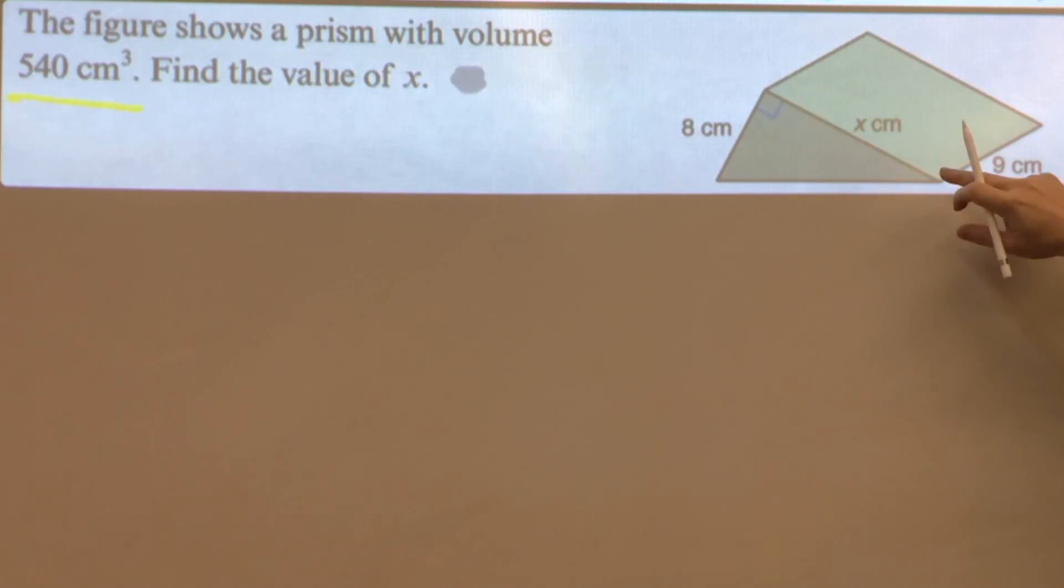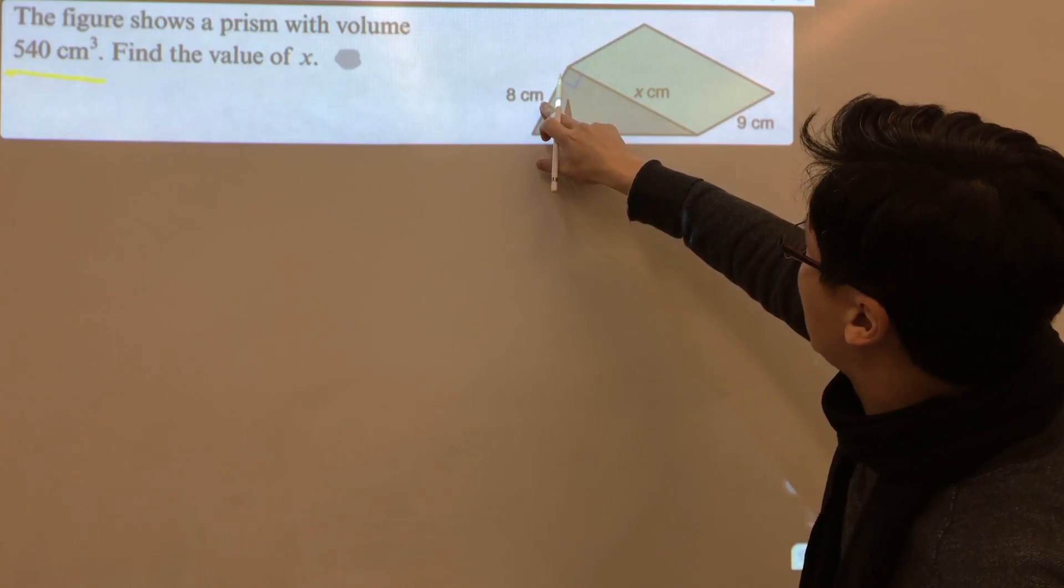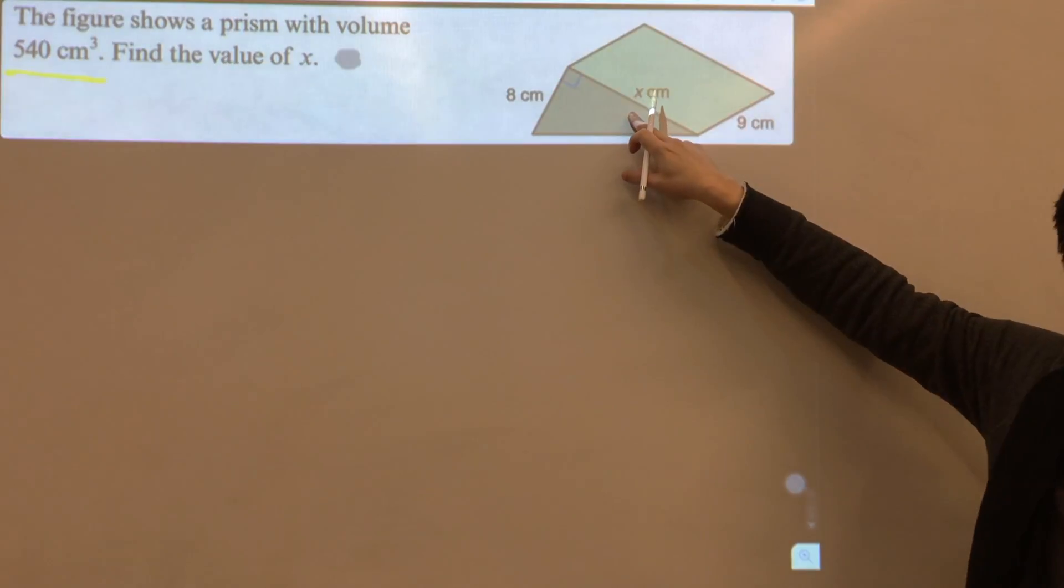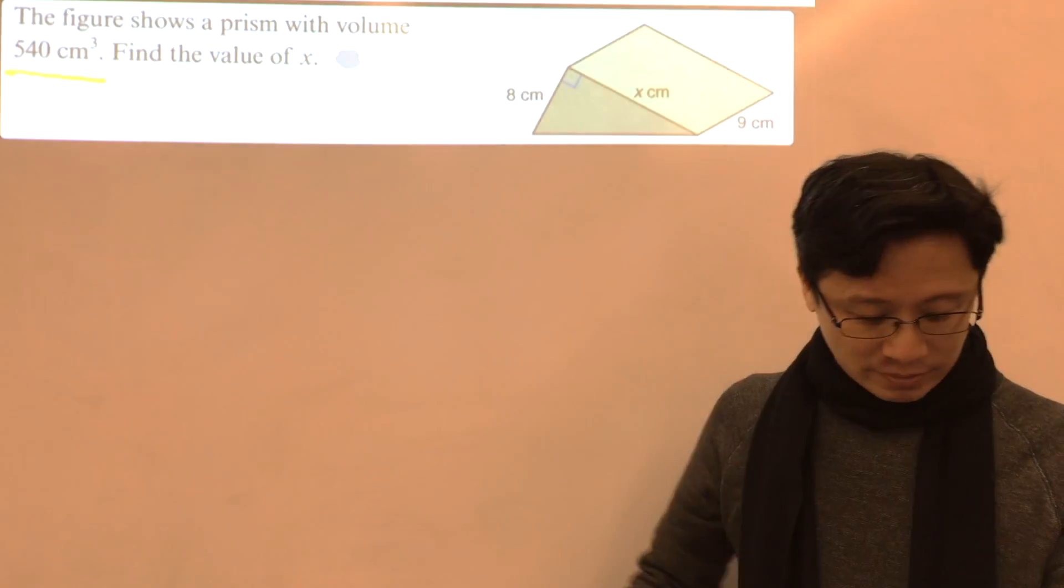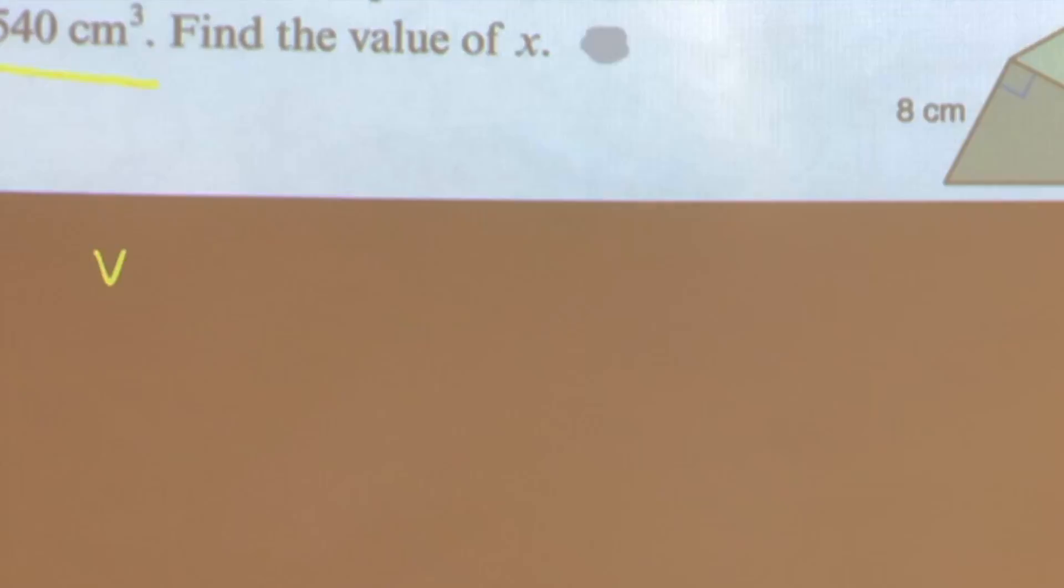triangular prism. The triangle has a side of x cm. Let's say this is the height, or this x is the base. Can we find x? Now we know that the volume of the prism equals the base area times